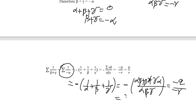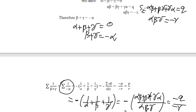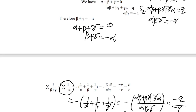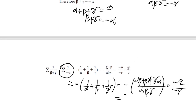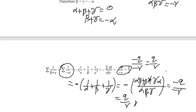So the answer is q/r. Putting S2 = q and S3 = −r, the result simplifies: −q/(−r) equals q/r. So q by r is the final answer.